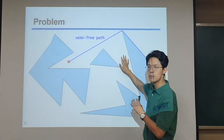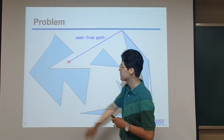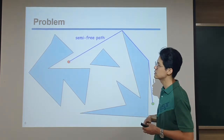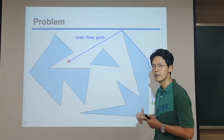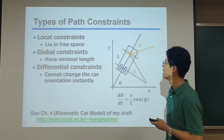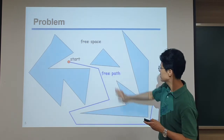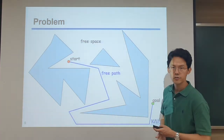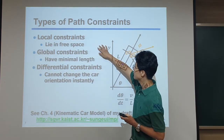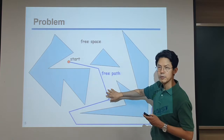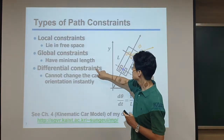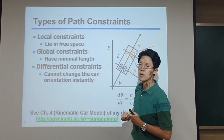We call that kind of path 'semi-free.' Basically, we maintain contact and slide through that path. Usually it's not really desired, but in some cases we might have to maintain that kind of contact. When computing a path, there could be many different types of constraints. There could be local constraints: for example, every point on the path should have no collision — every point in the trajectory should be in the free space, meaning the path should be collision-free.